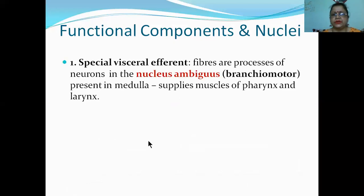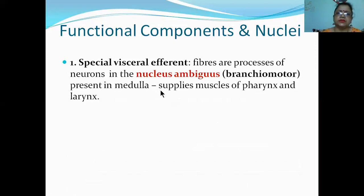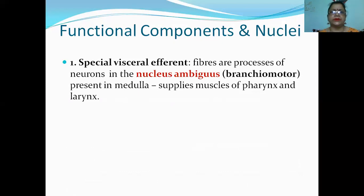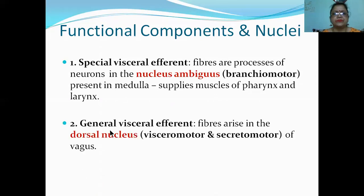Special visceral efferent - the fibers are processes of neurons of nucleus ambiguus, which is the branchiomotor nucleus present in the medulla and supplies muscles of the pharynx and larynx. Remember that the vagus nerve comes out of the medulla, so all the nuclei are from the medulla.